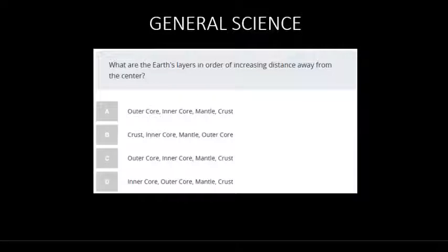The question is: What are the Earth's layers in order of increasing distance away from the center? Okay, so we're going from the center, coming out to the edge. Think of it as like a pie. We'd start in the middle, which would be the inner core.